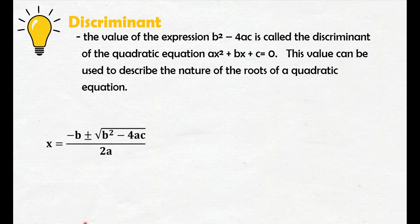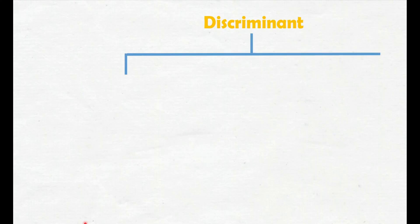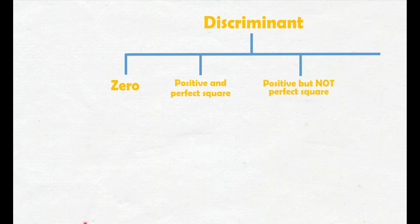Ang tawag natin sa value ng expression na nasa loob ng radical sign na b squared minus 4ac ay discriminant. Ang discriminant ay pwedeng maging zero, positive and perfect square, positive but not perfect square, at pwede rin maging negative. Ang ginagawa nitong discriminant ay para malaman natin kung ano ang nature ng roots ng isang quadratic equation.